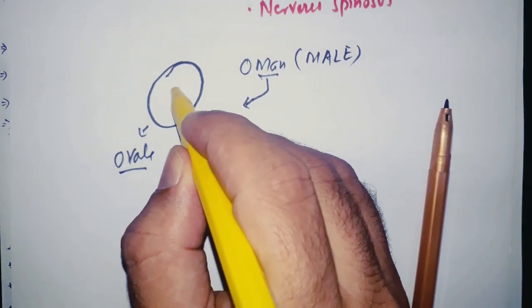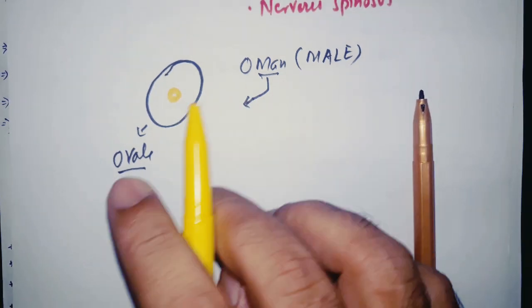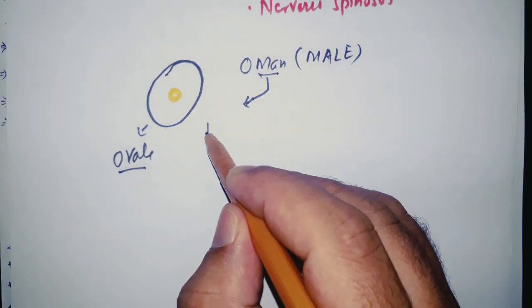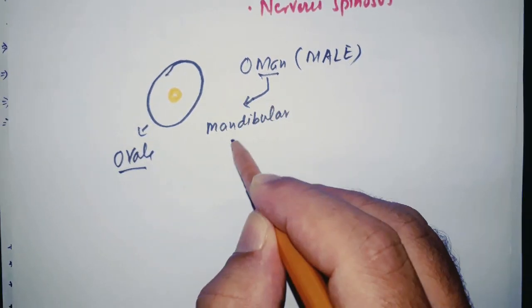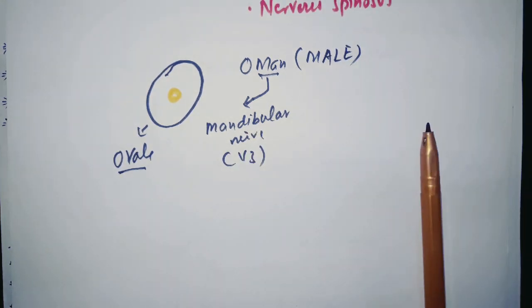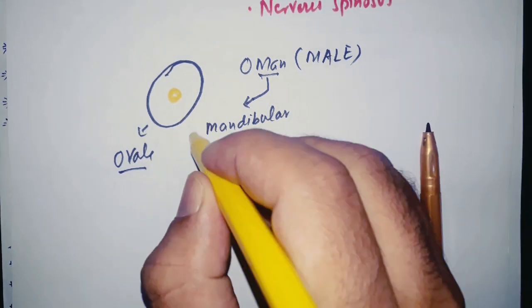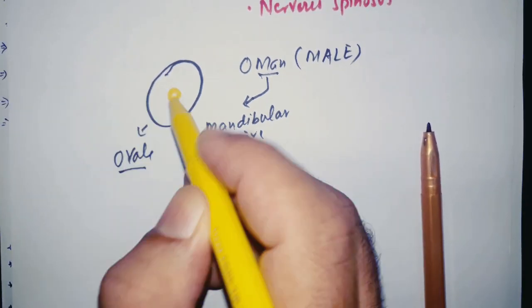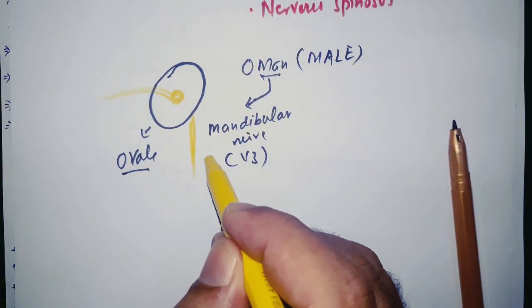Let's draw the relationship of different structures which are passing through the foramen ovale. So this is mandibular nerve, which is the third branch of trigeminal nerve, so we can also call it V3. So at this area, V3 actually passes through foramen ovale. So this is the V3 mandibular nerve.